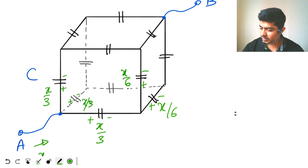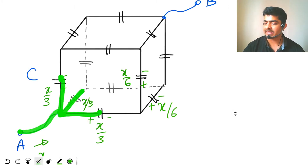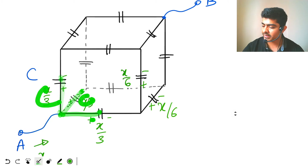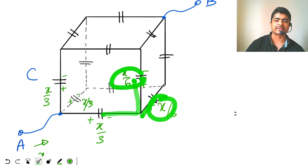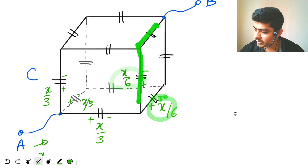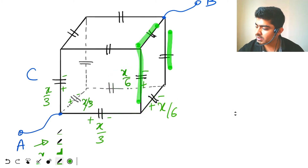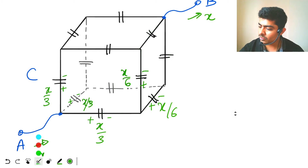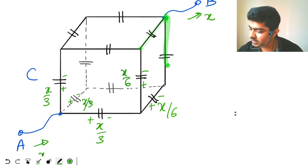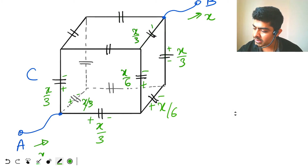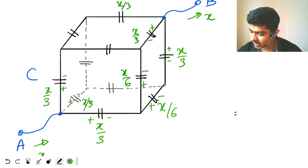So charge x entering splits equally: x/3, x/3, x/3. Then again x/3 distributes equally into x/6 and x/6. Now reaching point B, charge x should come out, so x/3, x/3, and x/3 should come from the three capacitors — x/3 charge here, x/3 charge here, and x/3 charge here. I made a small mistake — the plus/minus polarity should be in the opposite direction.